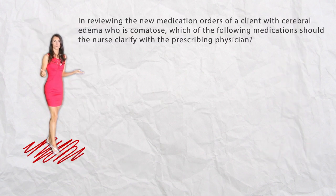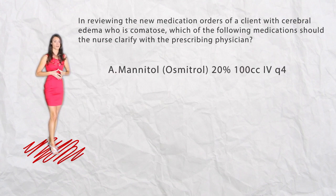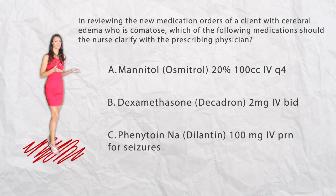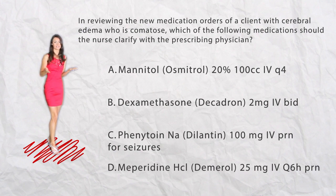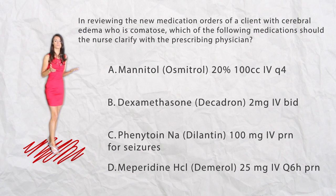Next question: In reviewing the new medication orders of a client with cerebral edema who is comatose, which of the following medications should the nurse clarify with the prescribing physician? A. Osmotrol 20% 100cc IV Q4, B. Decadron 2mg IV BID, C. Dilantin 100mg IV PRN for seizures, or D. Demerol 25mg IV Q6 PRN. Mannitol is a hyperosmotic agent/diuretic and Decadron is a steroid, both used to reduce brain edema. Dilantin is used as a prophylactic for seizures, which can occur during increased intracranial pressure. However, narcotics should be avoided in clients with increased intracranial pressure because they can mask the level of responsiveness, making D the correct answer.